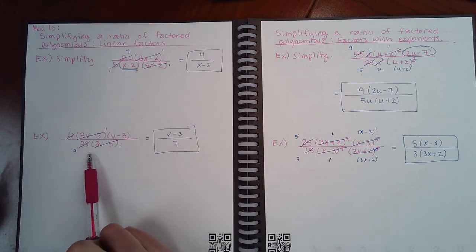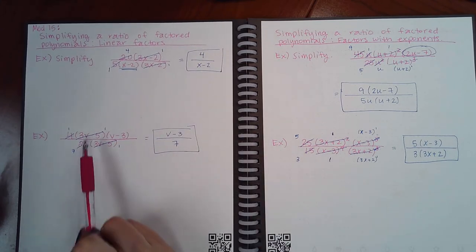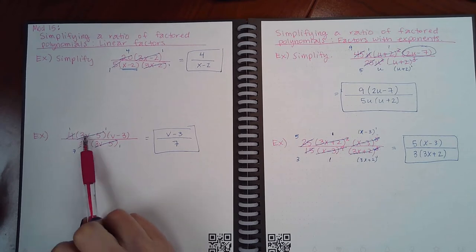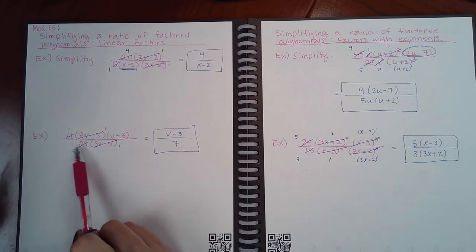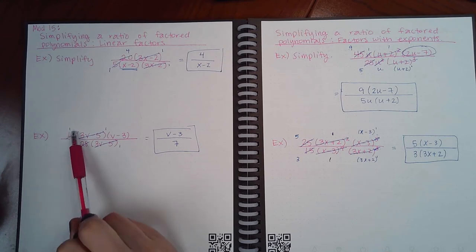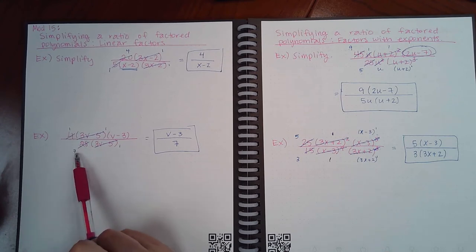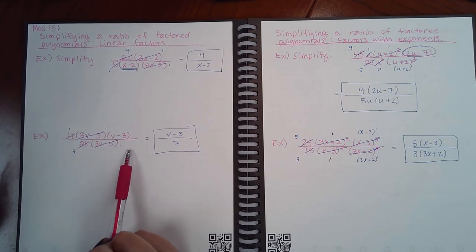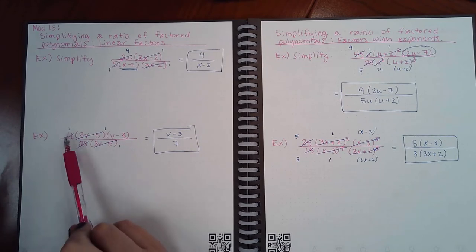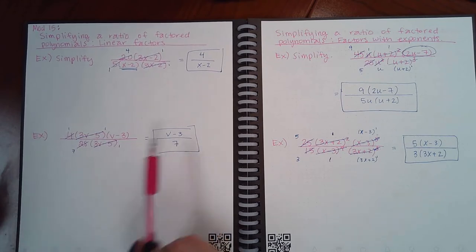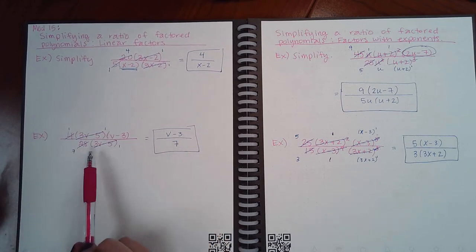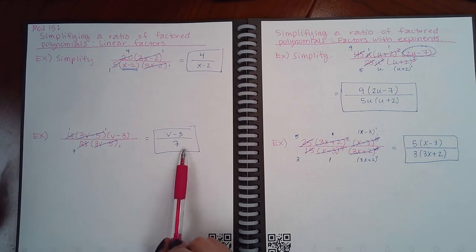For the next example, (3v − 5) and (3v − 5) cancel. 4 and 28 can be reduced by 4, giving 1 and 7. This factor cannot reduce with anything downstairs, so it stays. The result is (v − 3) in the numerator over 7 in the denominator.